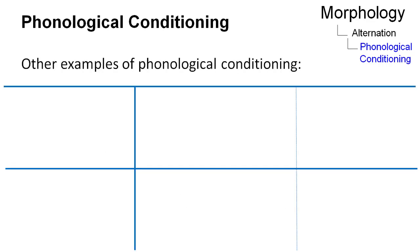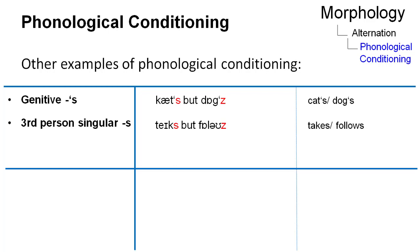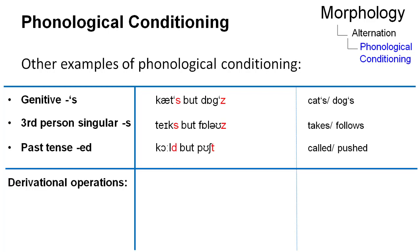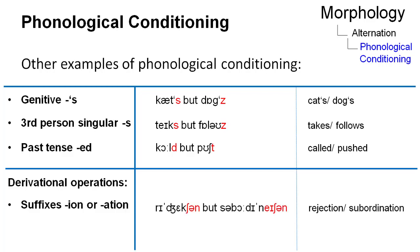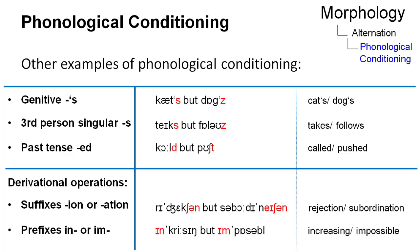Other examples of phonological conditioning in present-day English concern the alternation of allomorphs of the genitive 's', the third-person singular 's', and past tense '-ed'. Derivational operations can also be subject to phonological conditioning, such as the choice of '-ion' or '-ation', and even prefixes such as '-in' or '-im'.